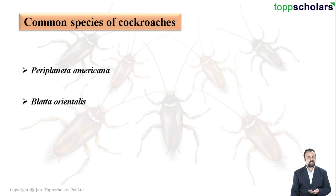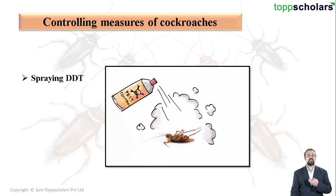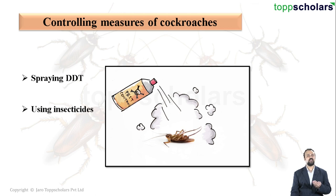Let us see the controlling measures of cockroaches. Spraying DDT is one of the best methods to control and kill cockroaches. One can also use various insecticides which are available in the market.